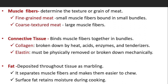Intramuscular fat plays a key role in various quality traits of meat and mostly consists of structural lipids (phospholipids) and storage lipids. Muscle fibers determine the texture or grain of meat. Fine-grained meat has small muscle fibers bound in small bundles, while coarse-textured meat has large muscle fibers.